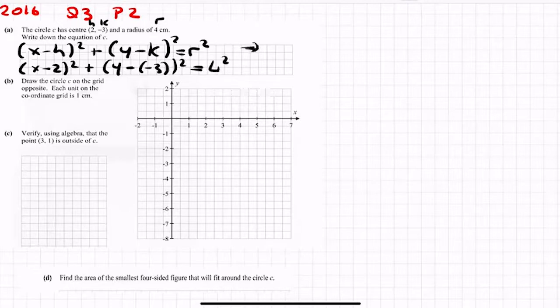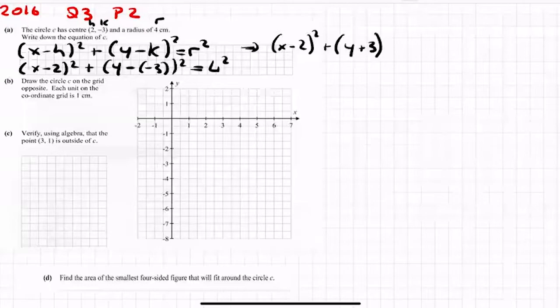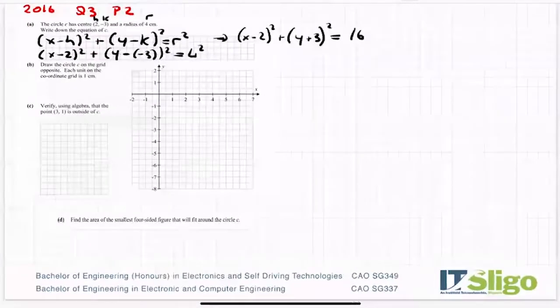And just tidying that up: (x - 2)² plus y, we would tidy up minus minus, that's a plus, (y + 3)² = 16. So when you're giving your answer for the equation of a circle, we tend not to work out the left hand side, but we do work out r squared. So that's that first part.